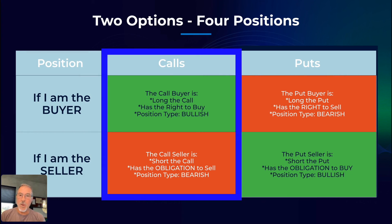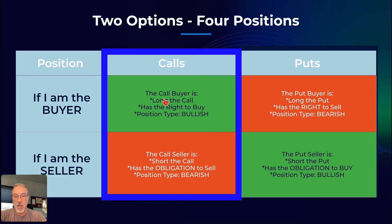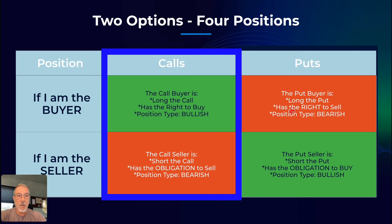There are really only two options: puts and calls. But you can have four positions, because I can be the buyer of a call, which gives me the right to buy — this is a bullish position. Or I can be a buyer of puts, a long put, which gives me the right to sell something at a certain price. This is considered a bearish position, used when I think the market might go down.